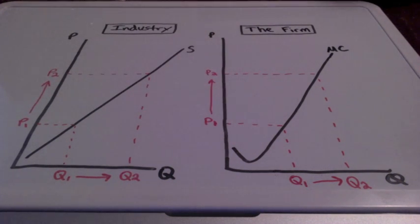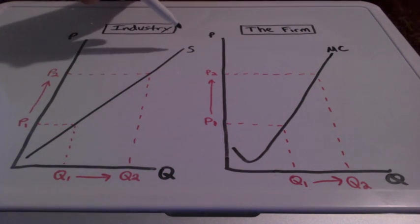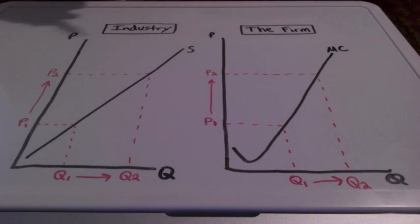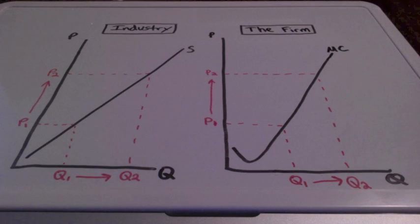And when we take a look at just the general supply curve, we are taking a look at an industry such as General Motors and the automobile industry. When we take a look at the marginal cost curve, we are taking a look at one individual firm such as one individual General Motors plant that would be producing cars.